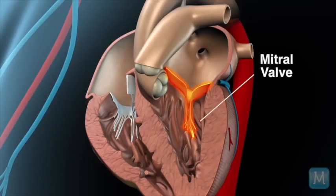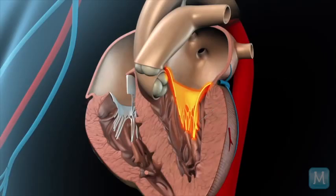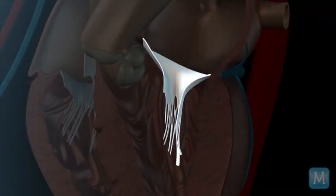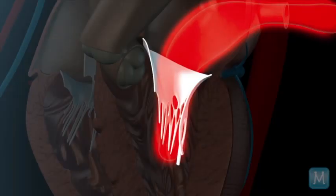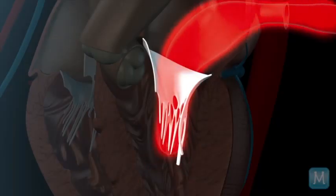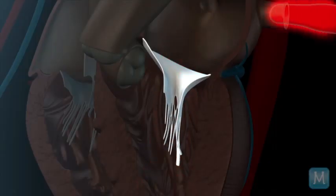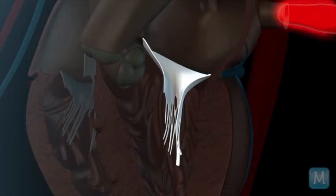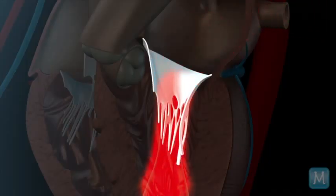The mitral valve opens to allow blood to exit from the upper chamber to the lower chamber, and then it closes so that when the heart pumps, blood goes forward instead of backward. However, in cases where the heart has enlarged, the valve leaflets may no longer touch. The heart itself stretches out, causing the valve to no longer close completely. When the main pumping chamber squeezes, some blood can go backwards.